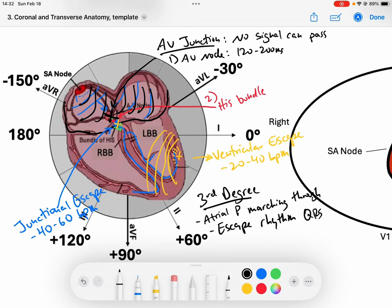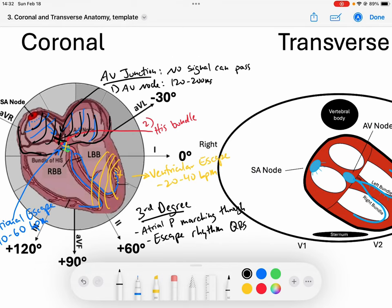Now, something that is interesting is that we will have P waves that are conducting normally. So the P to P interval will be regular, and the R to R interval will be regular. Why? Well, that's just because they are occurring completely irrespective of each other. There is complete dissociation.